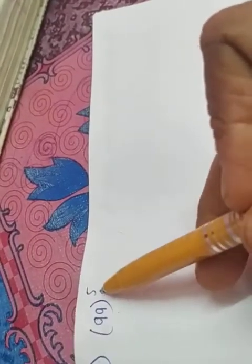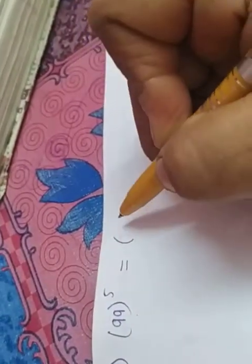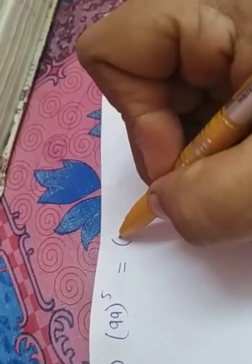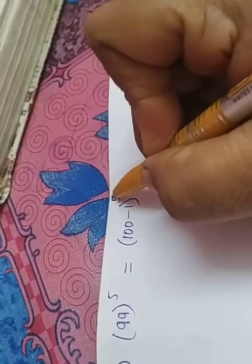Next, we have to find the value of 99 raised to 5. So we are going to apply binomial. Since we have to apply binomial, we require 2 terms. So instead of 99, I can write the value 100 minus 1 raised to 5.